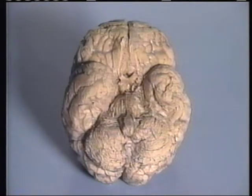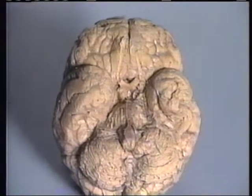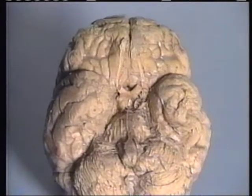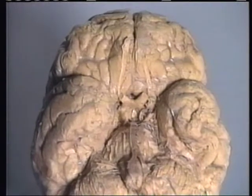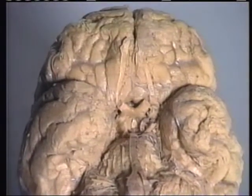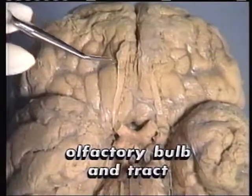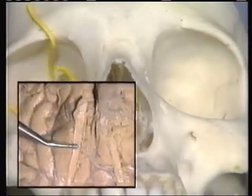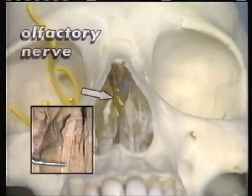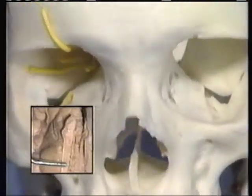We will now demonstrate the location of the 12 pairs of cranial nerves on the inferior surface of the brain and the foramina which transmit them through the skull. Several of the blood vessels to the brain have been removed on one side to demonstrate the nerves more clearly. The olfactory bulb and tract lie on the undersurface of the frontal lobe. Cranial nerve 1, carrying sensory impulses of smell from the nose to the brain, enters the skull through the cribriform plate of the ethmoid bone.